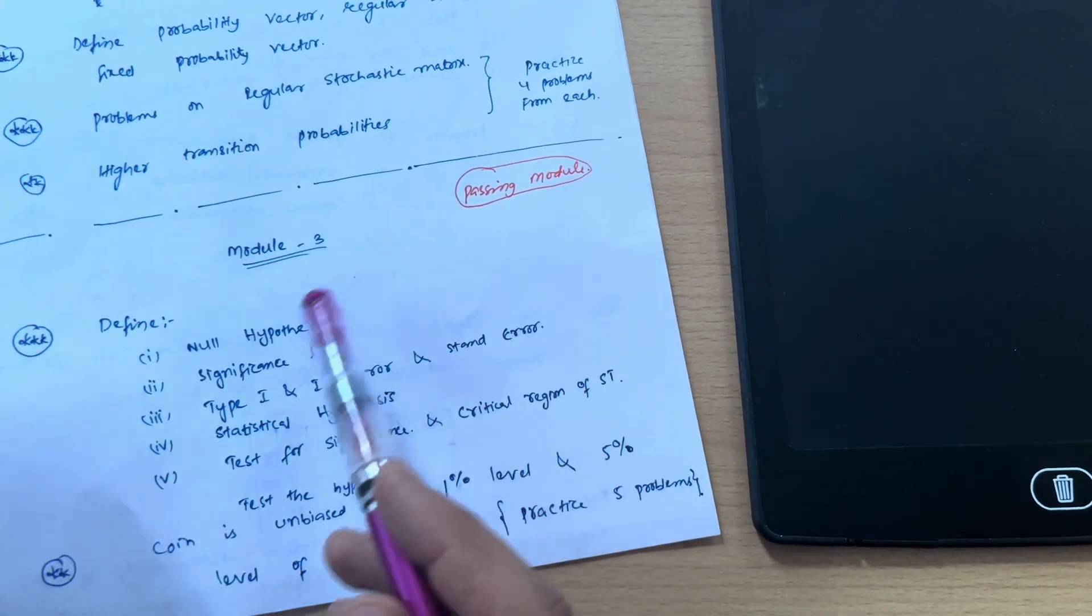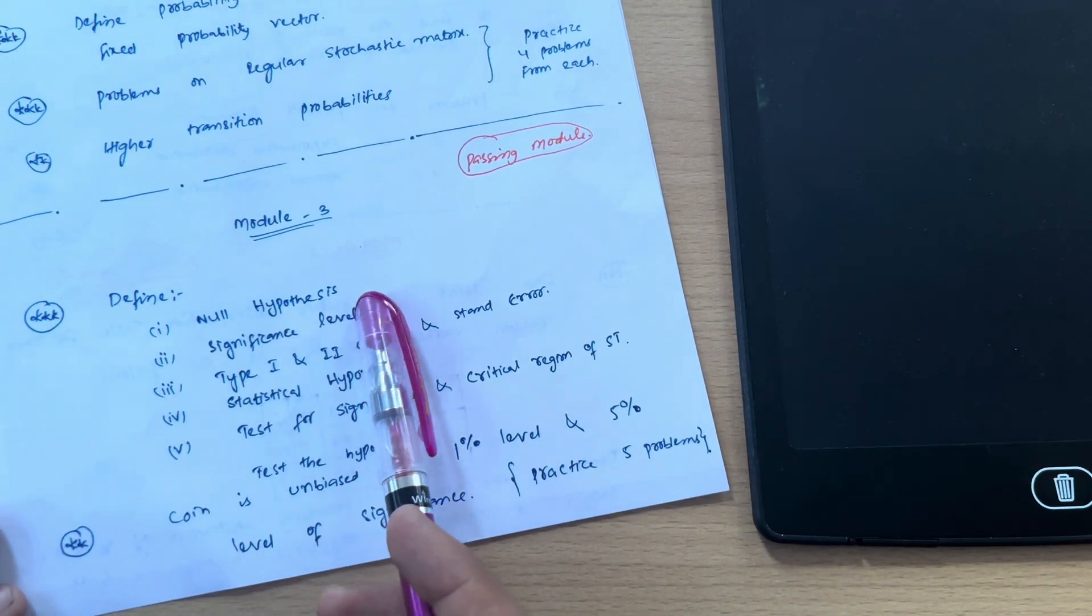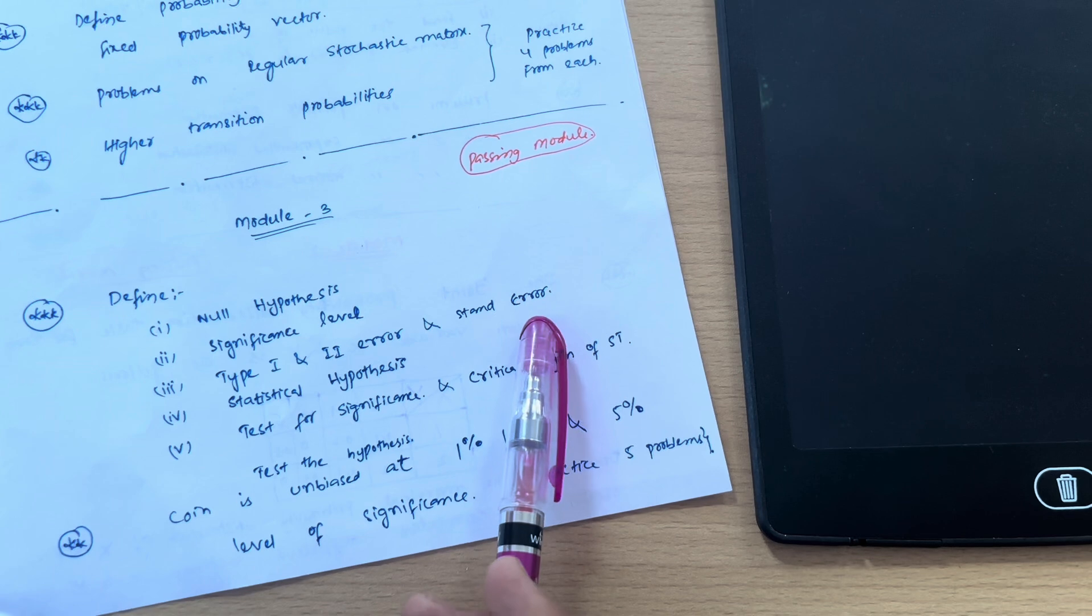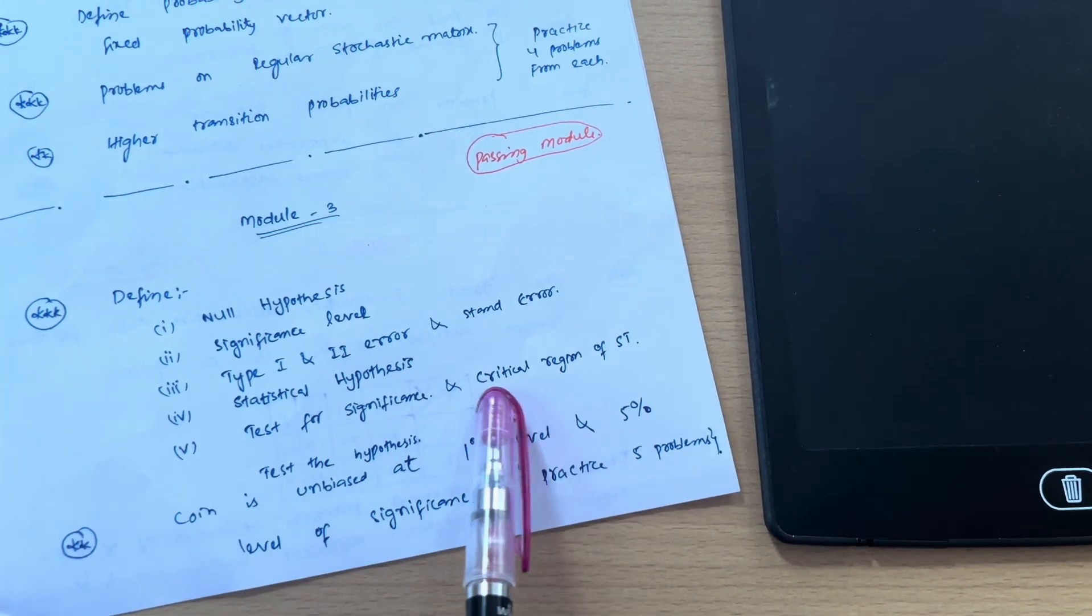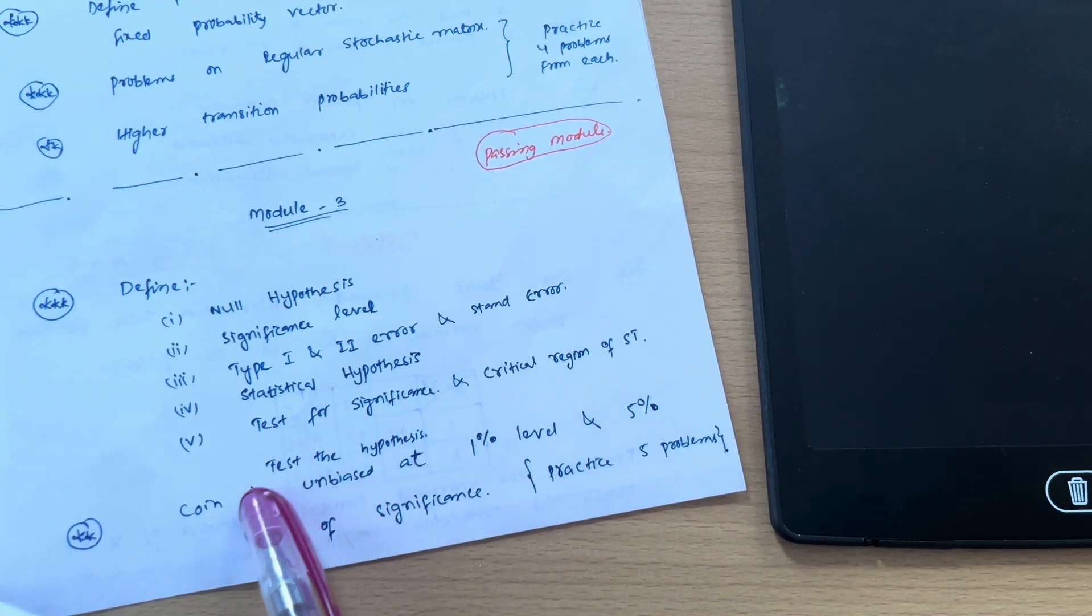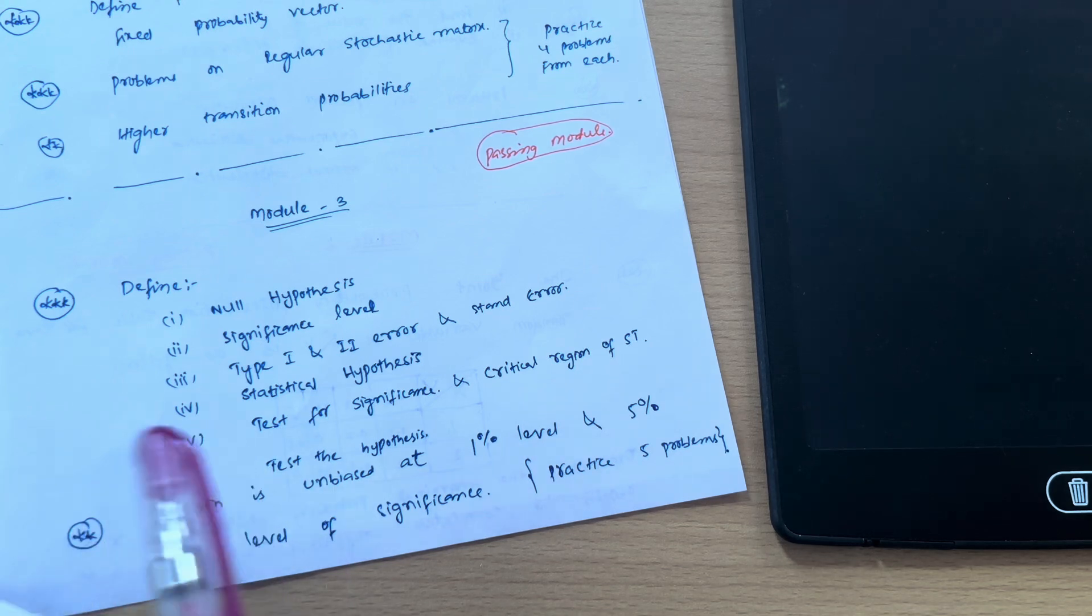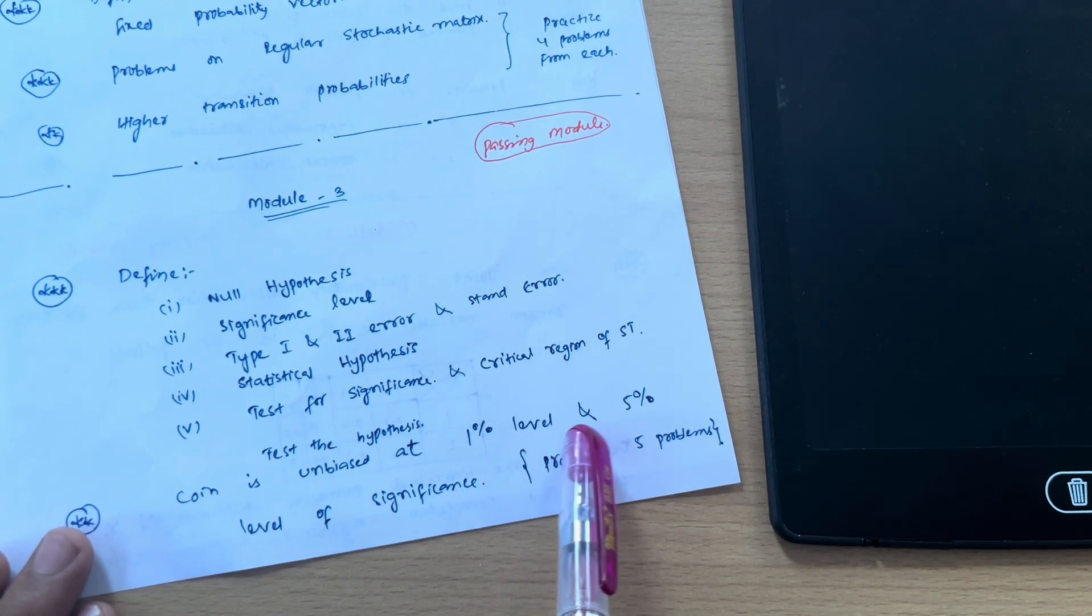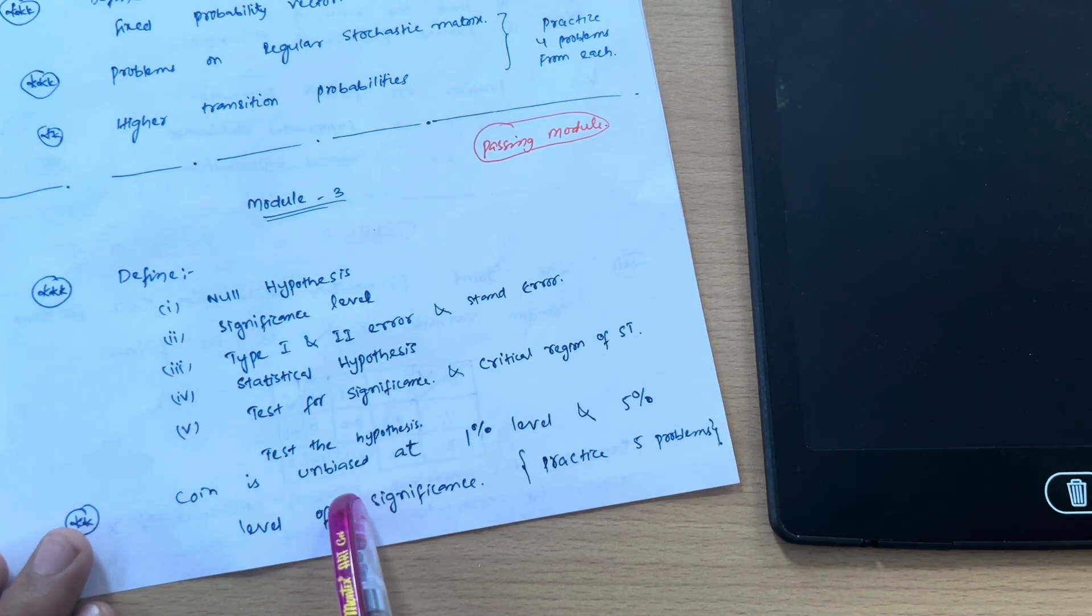Next we have Module 3, which is again a passing module in which some definitions you have to cover. Define null hypothesis, significance level, type one and type two error, standard error, statistical hypothesis, test for significance, and critical region of a standard test. Next we have test the hypothesis where questions will be like test the hypothesis where coin is unbiased at 1% level and 5% level of significance.